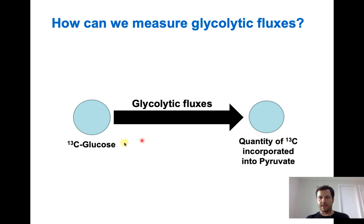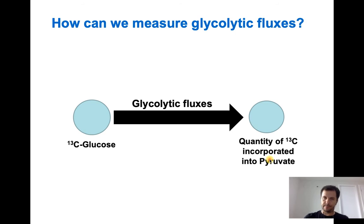The label from glucose is incorporated into pyruvate over time, and from that you have the glycolytic fluxes.